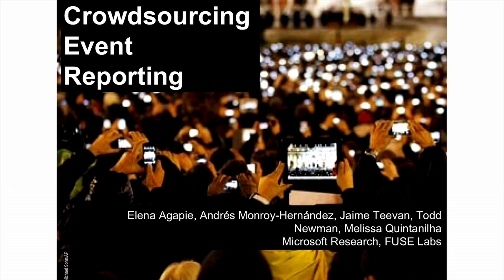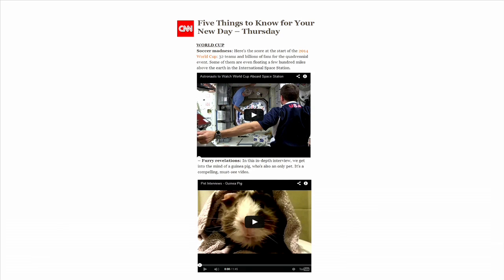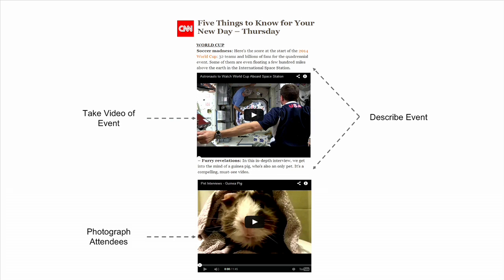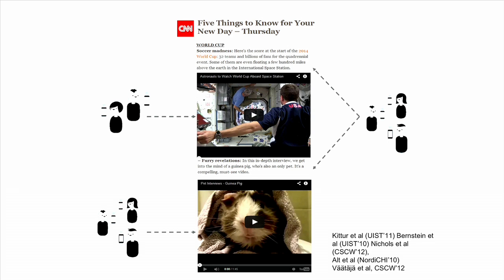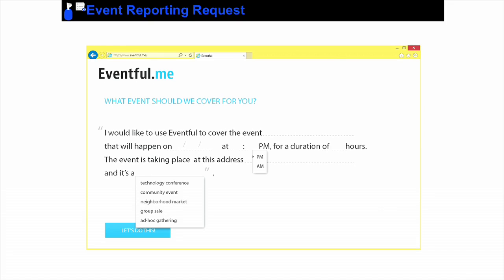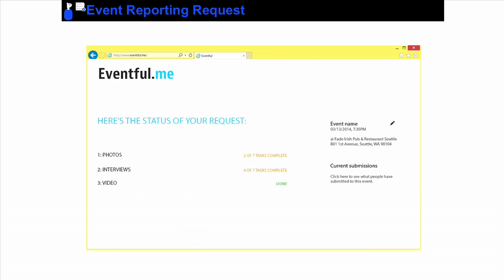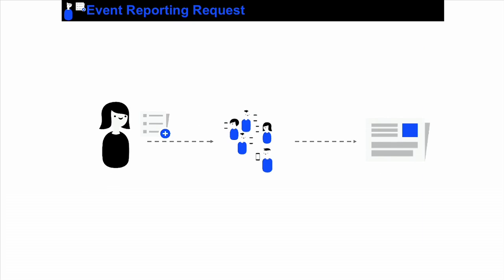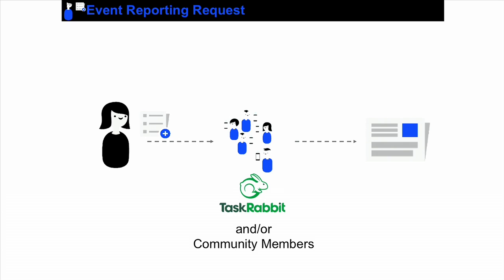Andres and Elena designed a system to structure different tasks that people can take to contribute to a news story. They broke individual stories into concrete tasks that different people can complete. You go to Eventful, request an event to be covered, say what type it is, how long it will last. It creates a checklist of tasks that need to be completed to write the story. Those tasks can be sent to community members by your community mailing list, and also sent to TaskRabbit using dynamically allocated labor pools to fill in the gaps.